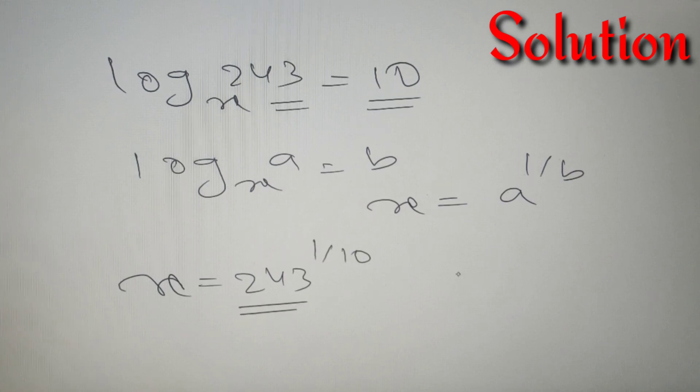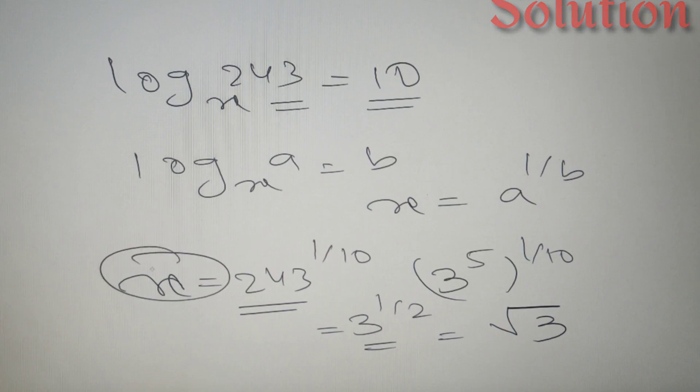Now we know that 243 is equal to 3 raised to power 5. So 3 raised to power 5, whole raised to power 1 by 10, is equal to 3 raised to power 1 by 2, and this is simply equal to root 3. So the value of x is equal to root 3.